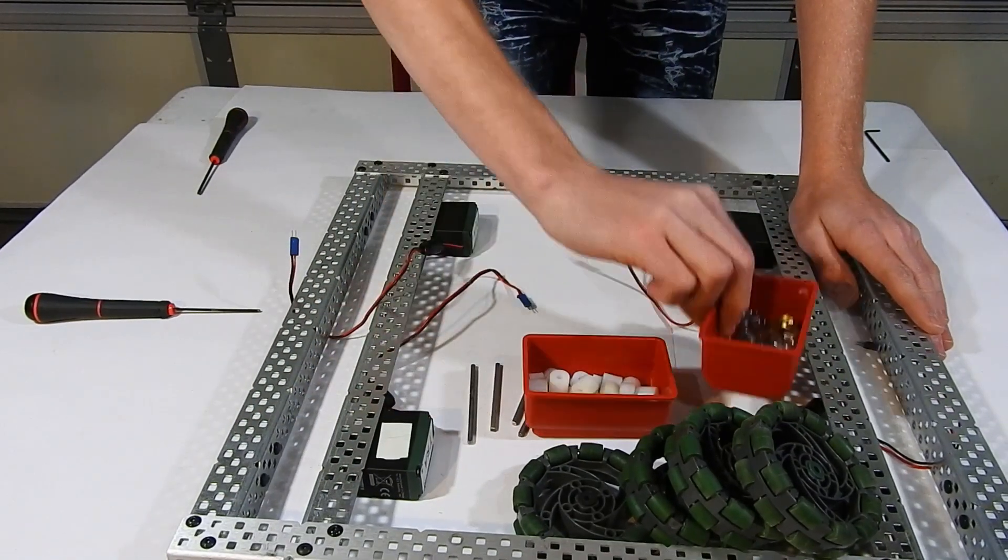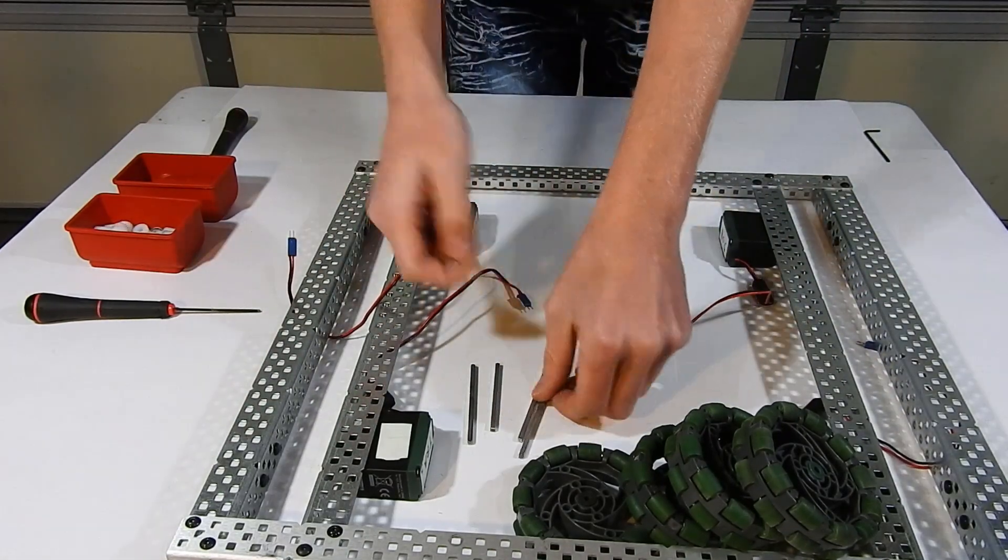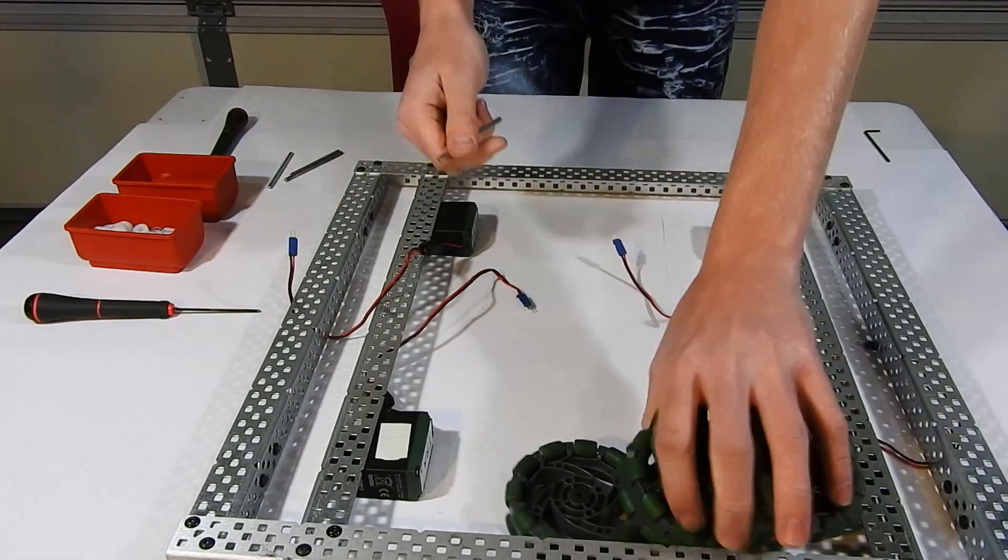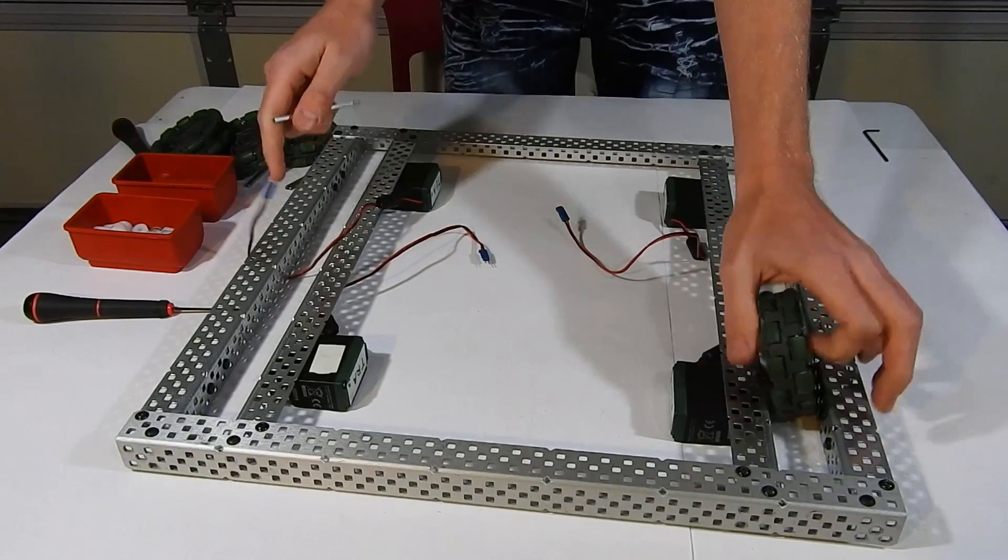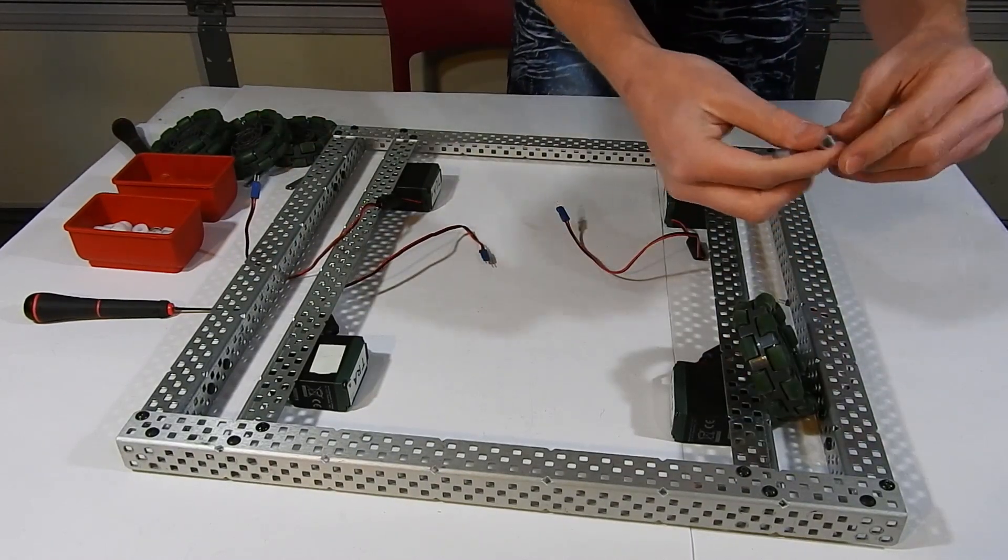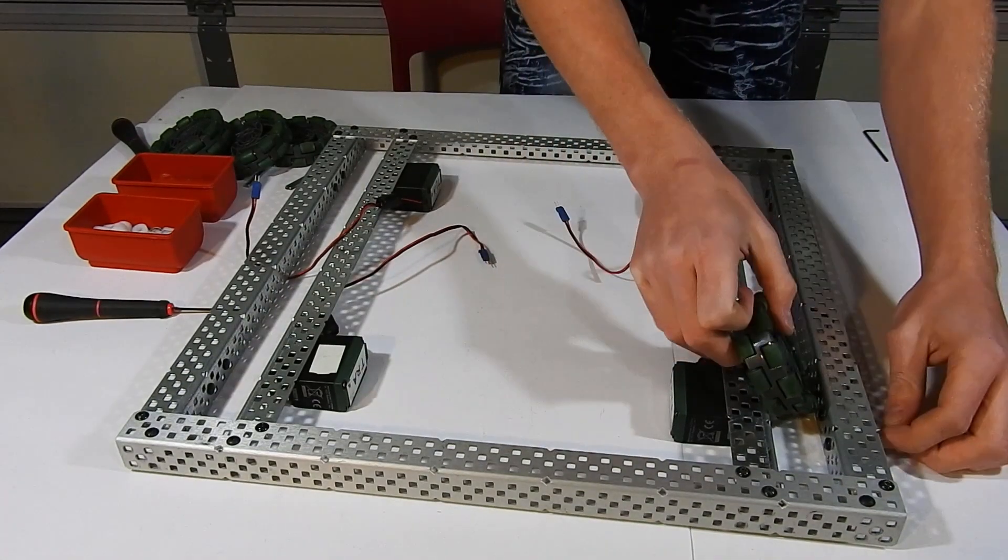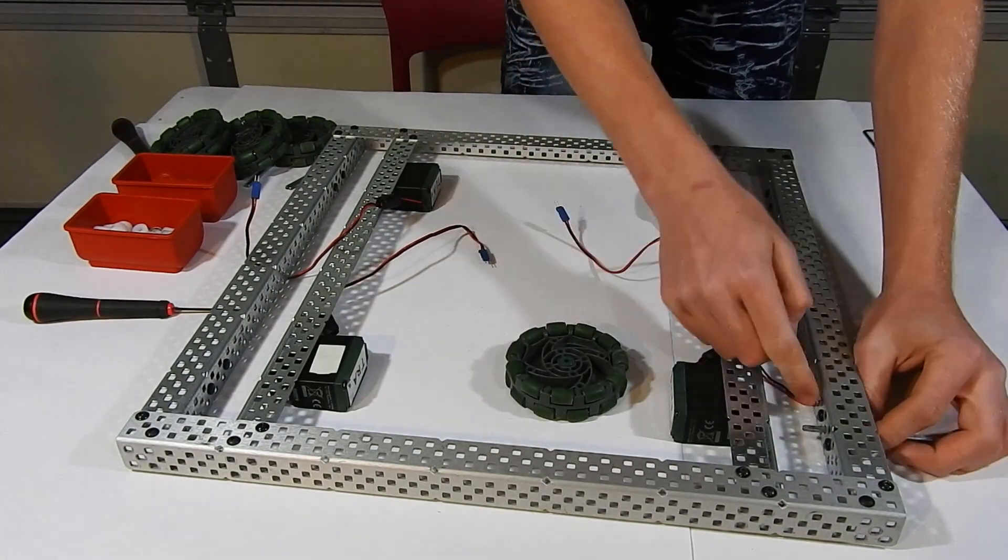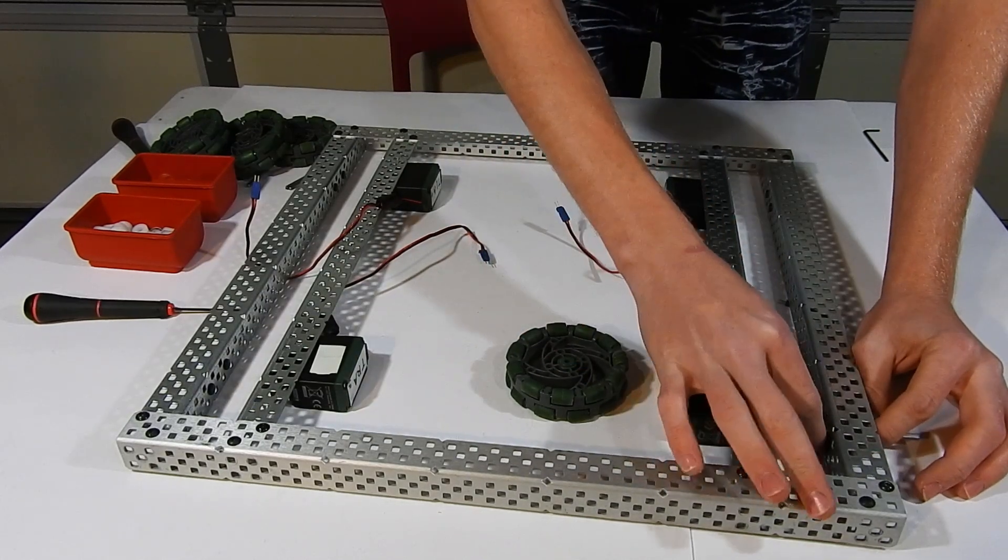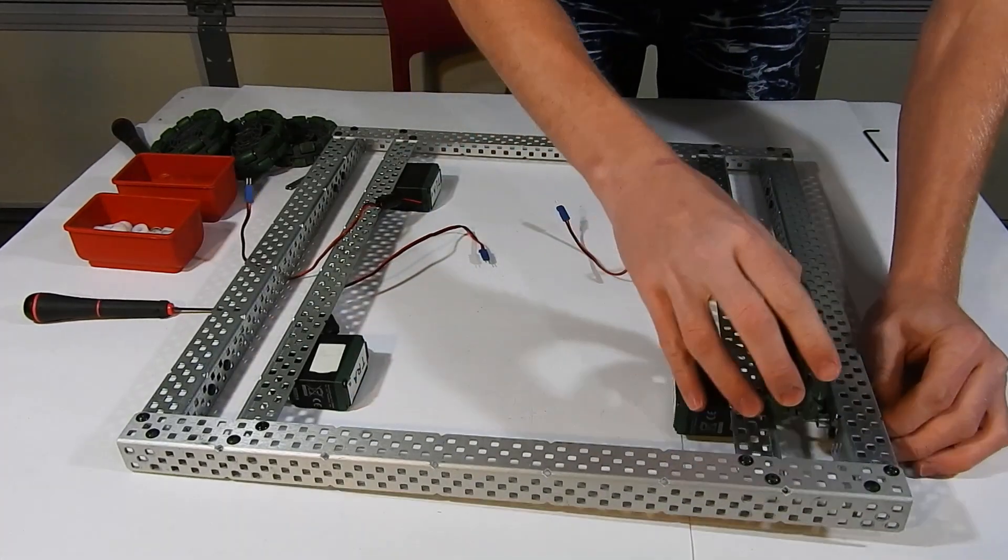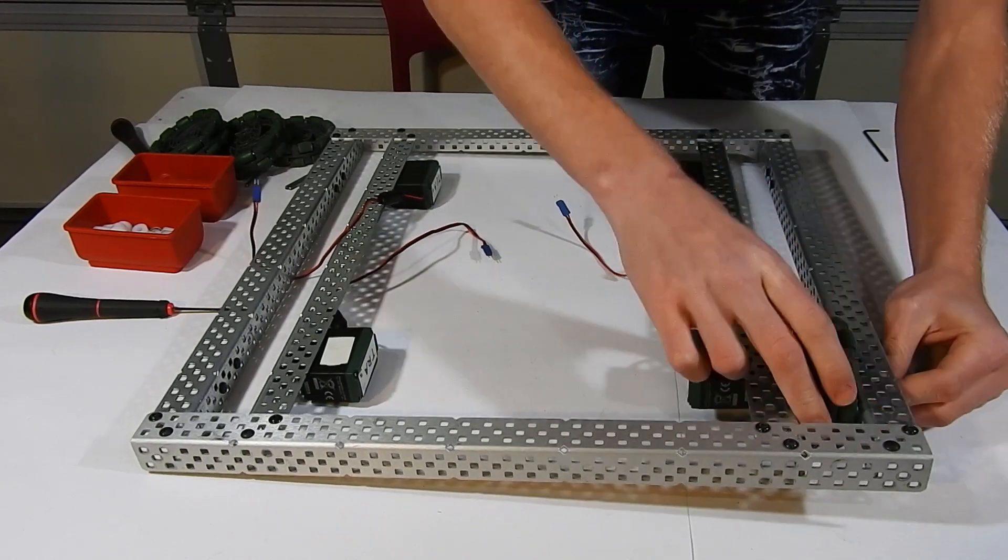So you're going to start by taking a collar, an axle, and a wheel. And you're going to pick a side. You're going to start with the axle. It will go through the hole of the bearing that we just put in. Then you're going to put on the collar. Then you're going to put the wheel in through the axle. The axle will go through the wheel.